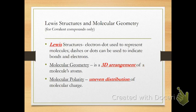So Lewis structures — that was what we did the other day. We did the electron dots, very simple. And we can use to indicate the bonds, either by electrons or by dashes — I'll use dashes. Molecular geometry is the 3D arrangement. We're drawing these on flat paper, so obviously they don't look 3D to us, but in reality, molecules are 3D. They're not drawn flat on paper.